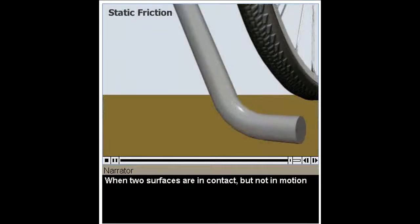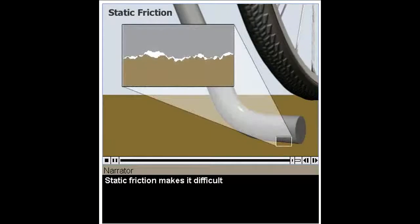When two surfaces are in contact, but not in motion, such as a bicycle's kickstand on the ground, they cause static friction. Static friction makes it difficult to begin moving an object. When motionless, the two surfaces can form more and stronger bonds than if they were moving. So static friction is usually harder to overcome than sliding or rolling friction. In this case, it prevents the kickstand from moving, so the kickstand can support the bicycle.